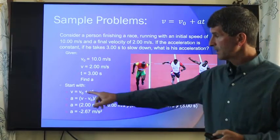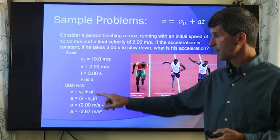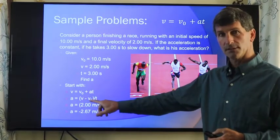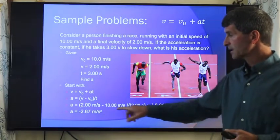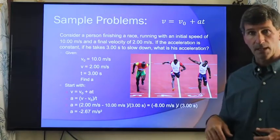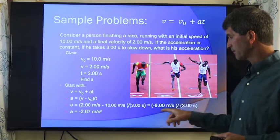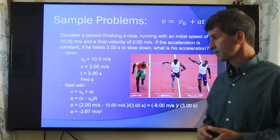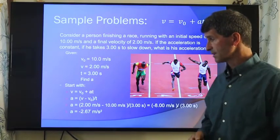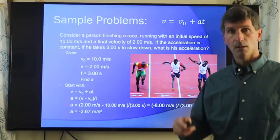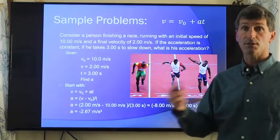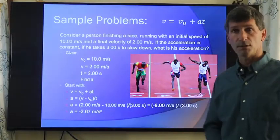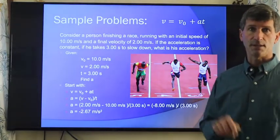Plug in the numbers, here's our original equation right here, but we're solving for a. So a is going to look like this. We solve for the acceleration. 2 meters per second minus 10 meters per second, so that's going to be negative. We divide that by 3 seconds, and we get an acceleration of negative 2.67 meters per second squared. So they started the race, they sped up, now we're finishing the race, they're slowing down. Acceleration is negative because the velocity is decreasing.